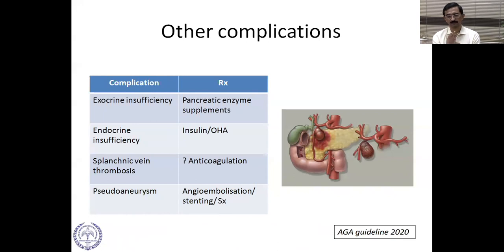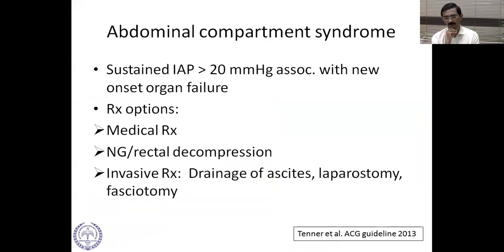Treatment of pseudoaneurysm is generally led by the interventional radiologist; some endoscopic therapies are described, but surgical backup is available if these fail. Abdominal compartment syndrome refers to sustained intra-abdominal pressure more than 20 mmHg with new onset organ failure. Treatment options include medical therapy, nasogastric or rectal decompression, and invasive therapy such as drainage of ascites, laparostomy, and fasciotomy.